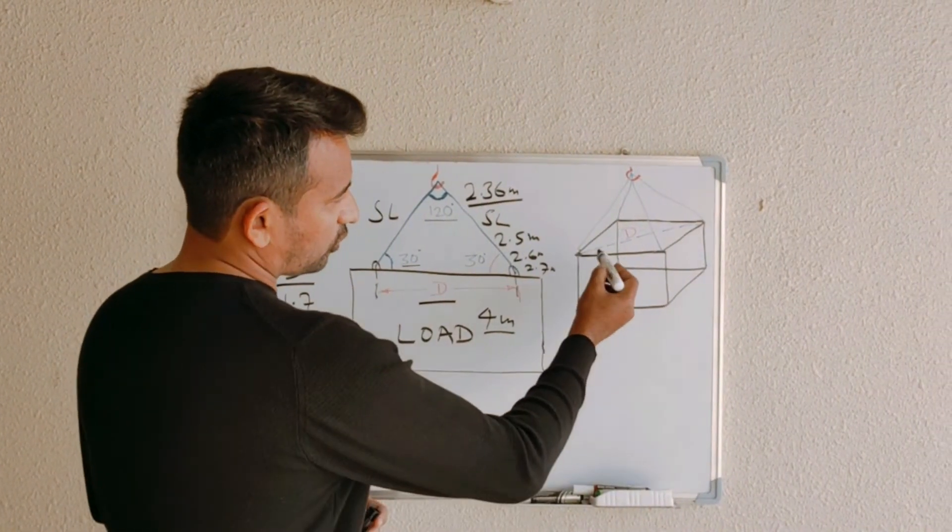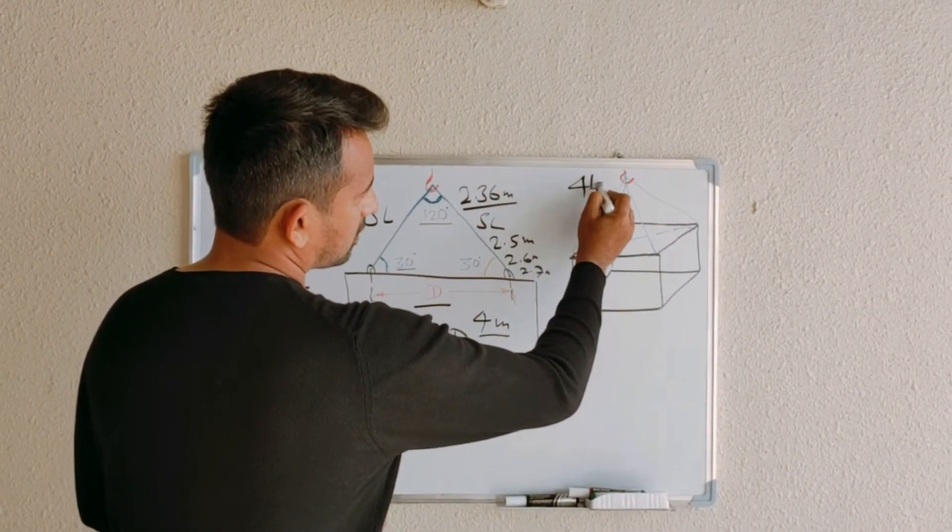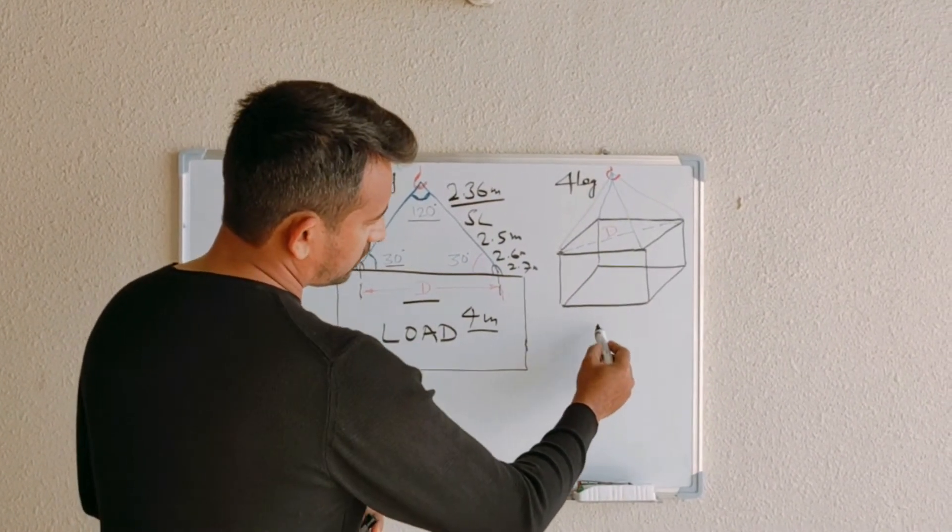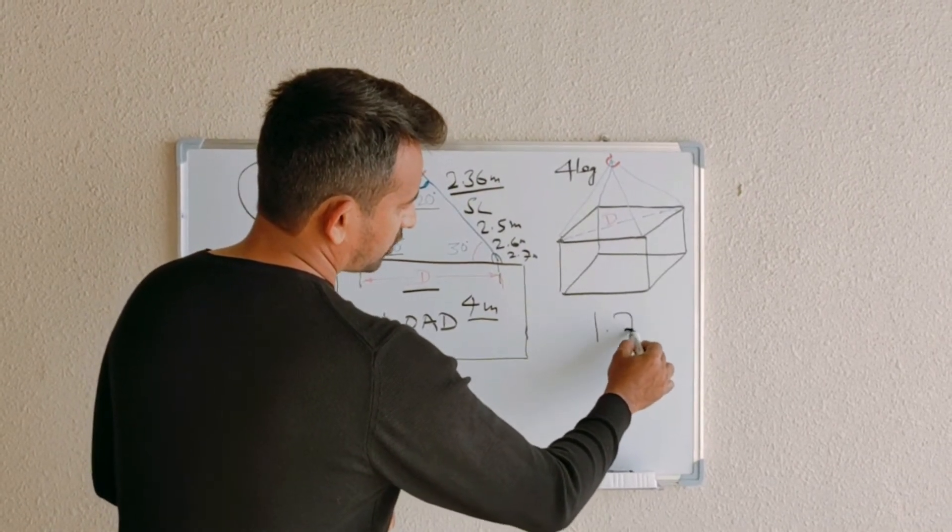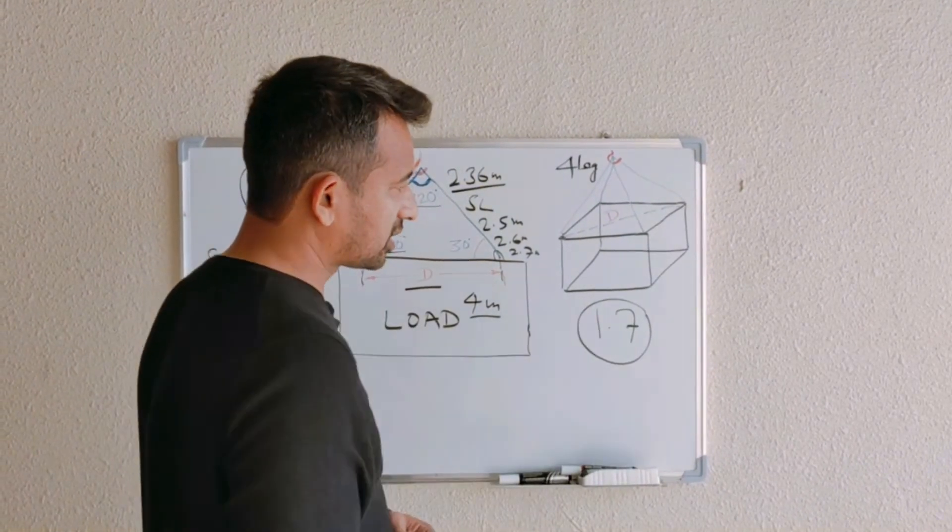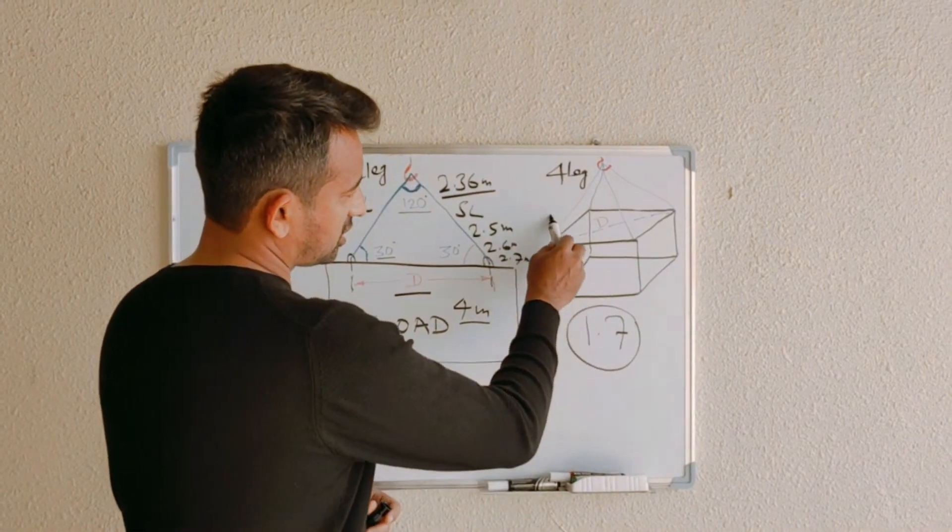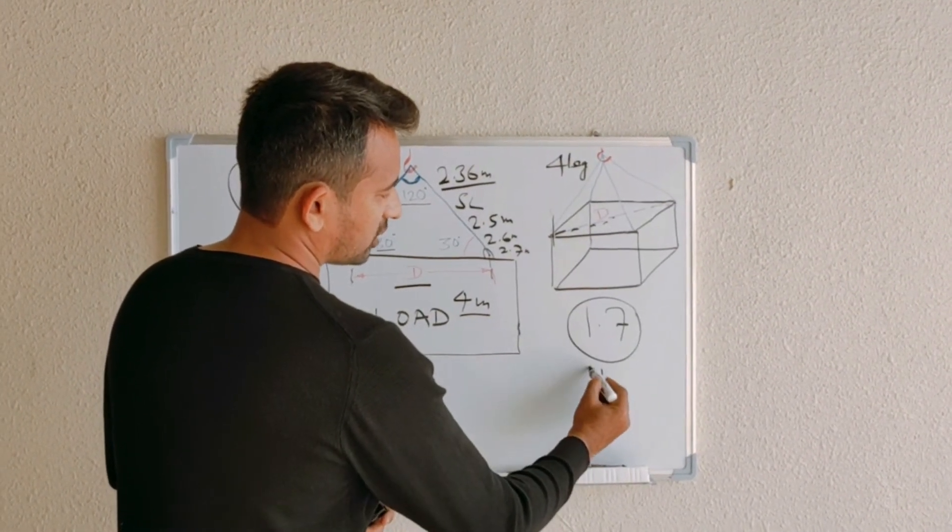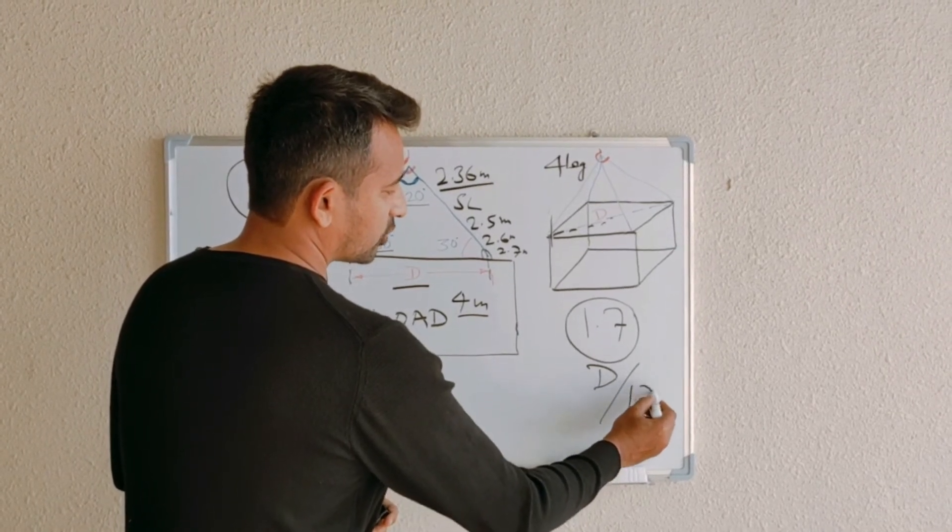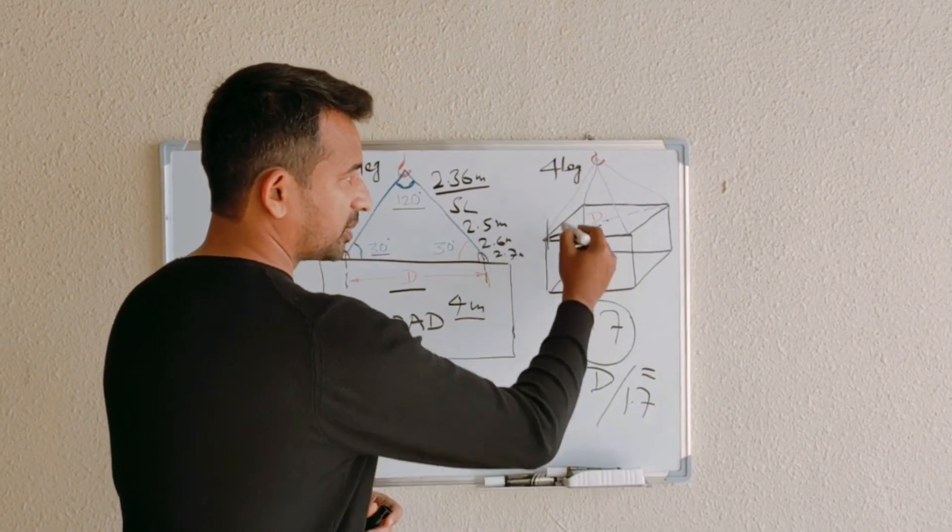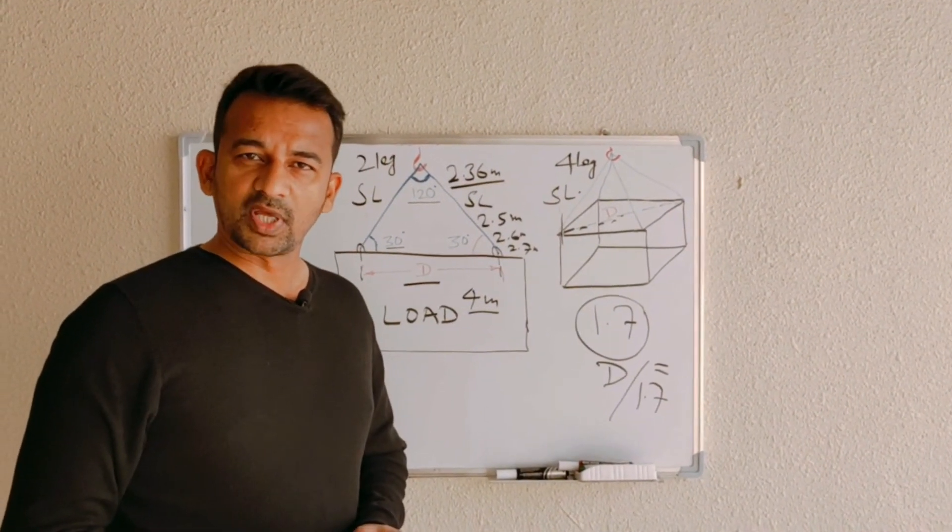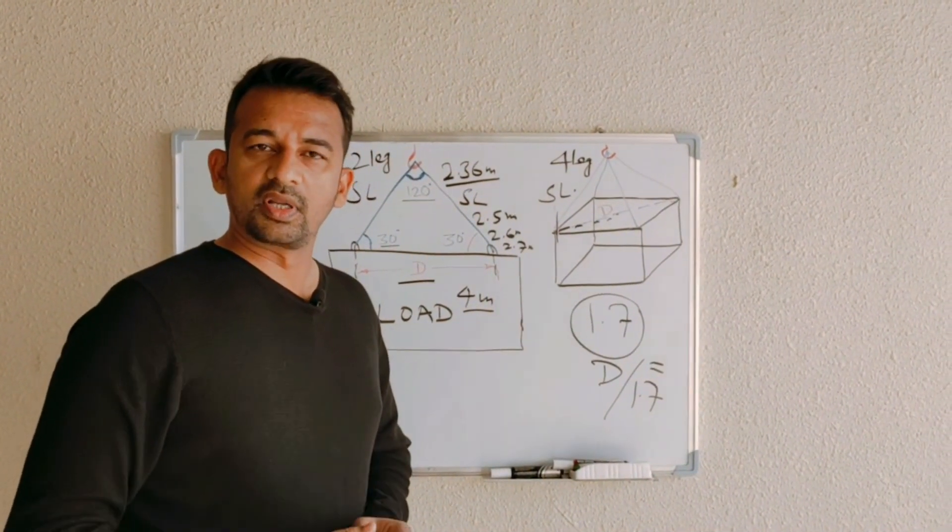Similarly, for four-leg—this was for two-leg—for four-leg, you just need to remember the same thing, 1.7. The only difference is you will measure it diagonally, this distance. Whatever the distance, you will divide it by 1.7, and your answer will be your required sling length. I'm Tarek Mobin, your learning partner in lifting.